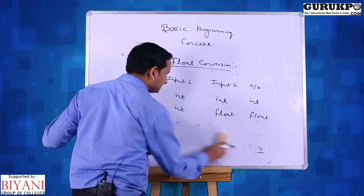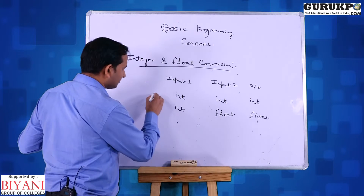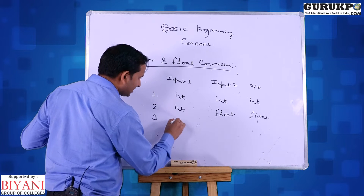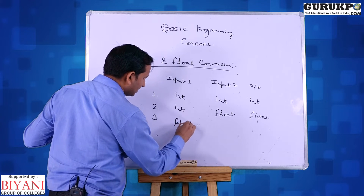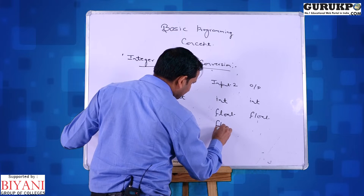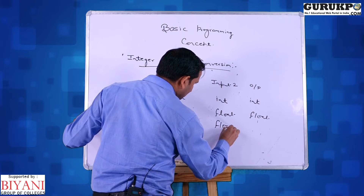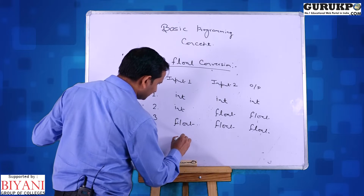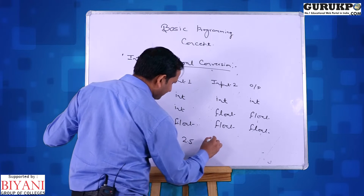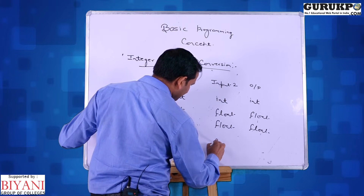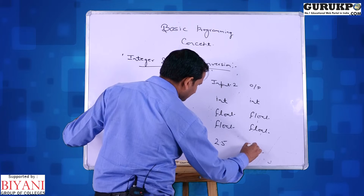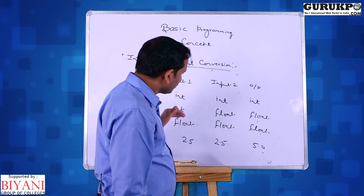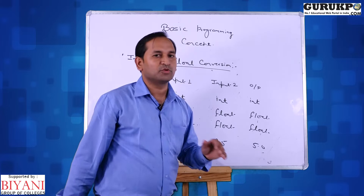The third and last case: suppose the first input is float and the second input is also float, then the output will be float. For example, 2.5 and 2.5 gives 5.0 using float-float. This is generally used when all the inputs are float.